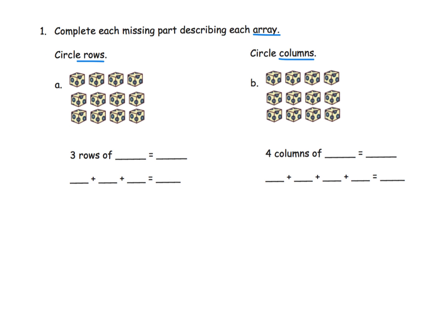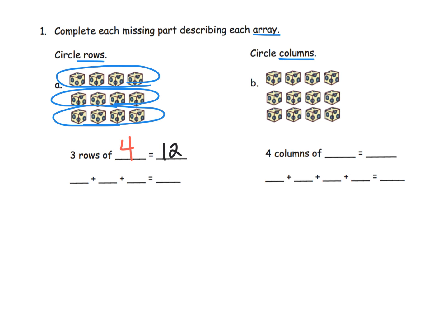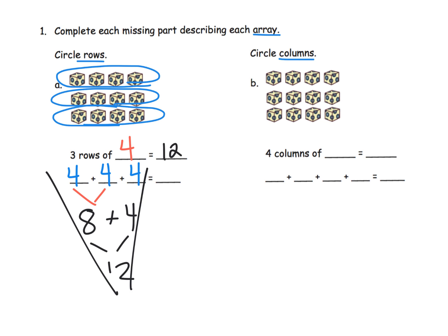Here we've got 'circle the rows.' We're going to circle each row — and there's a row, row your boat, gently down the stream. So there are our three rows, and we fill in the blanks: three rows of four, and that's equal to 12. How do we know it's equal to 12? Because we have four plus four plus four, and we know that four plus four is eight, plus that extra four equals 12. So the answer is 12.